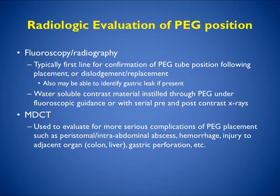In terms of evaluating PEG placement, fluoroscopy is typically the first line of confirmation of PEG tube position following placement, dislodgement, or replacement. It may also identify a gastric leak if present. You can inject water-soluble contrast material through the PEG under fluoroscopic guidance or with serial pre- and post-contrast x-rays. CT is used to evaluate more serious complications such as abscesses, hemorrhage, injury to adjacent organs like the liver or colon, gastric perforation, or in cases where fluoroscopy or radiography does not answer the question.